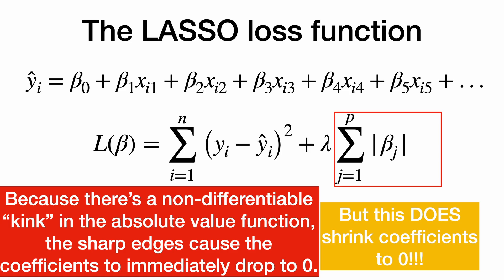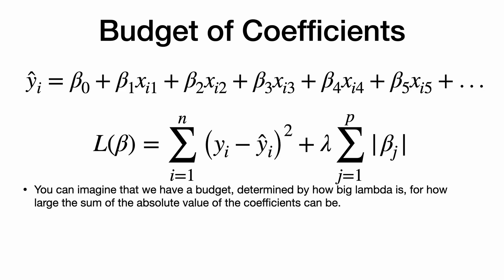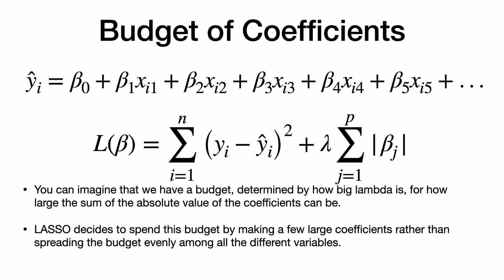This is a little confusing to understand, but I guarantee you it's true. We can also view this as sort of a budget of coefficients. You can imagine that we got a budget, and that's determined by how big lambda is, for how large the sum of the absolute value of the coefficients can be. And the lasso decides to spend this budget by making a few large coefficients rather than spreading the budget evenly among all the different variables. This causes variable selection. Yee-haw!